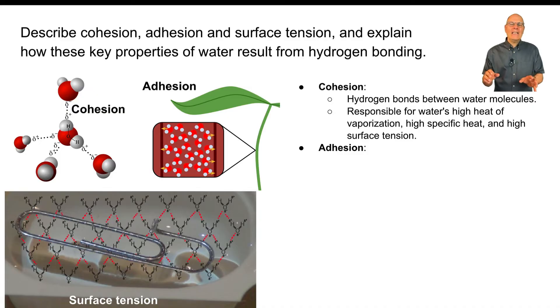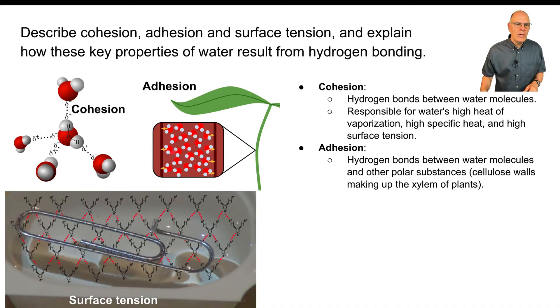Adhesion is water sticking to other stuff. So for example, here you see hydrogen bonds between water molecules and the cellulose walls that make up the conductive tubes of plants, which are also called xylem.